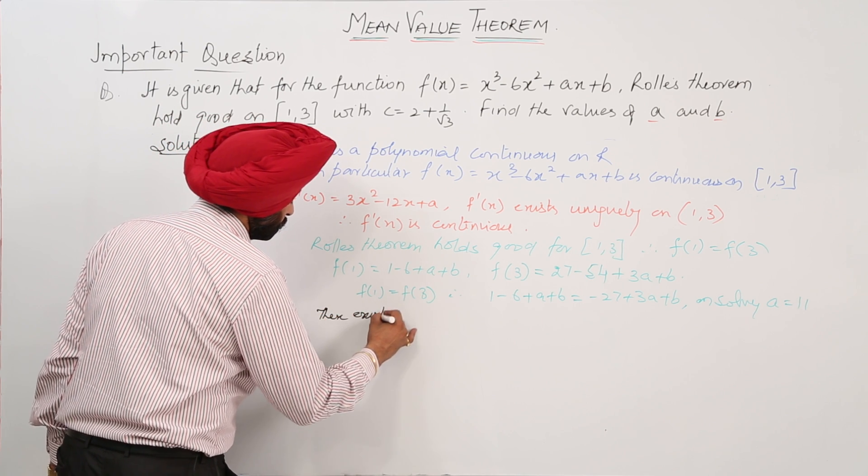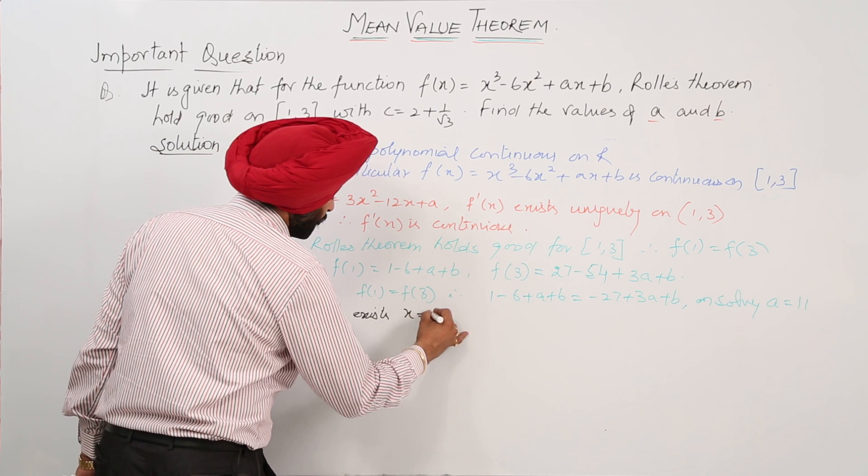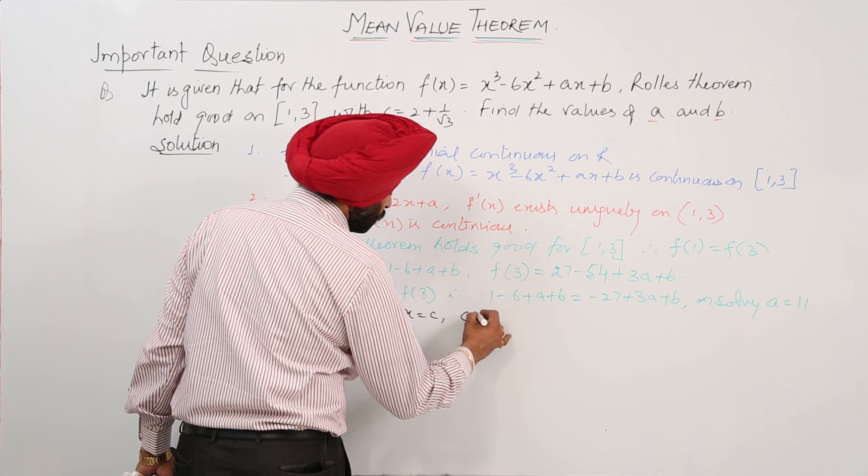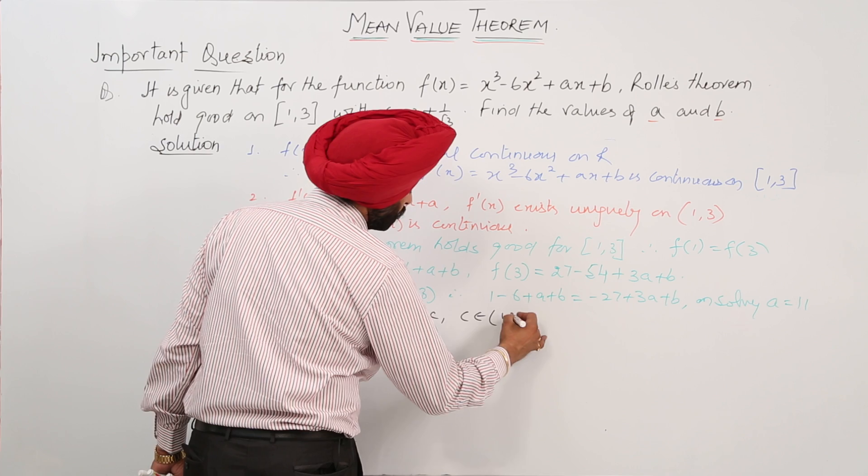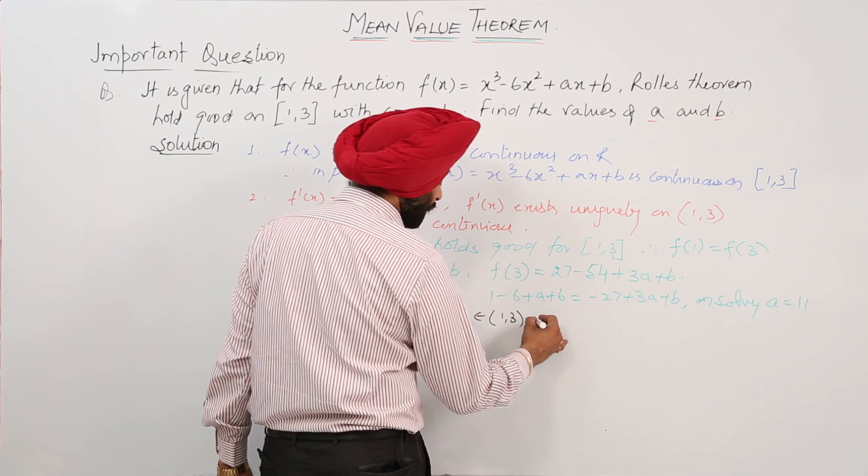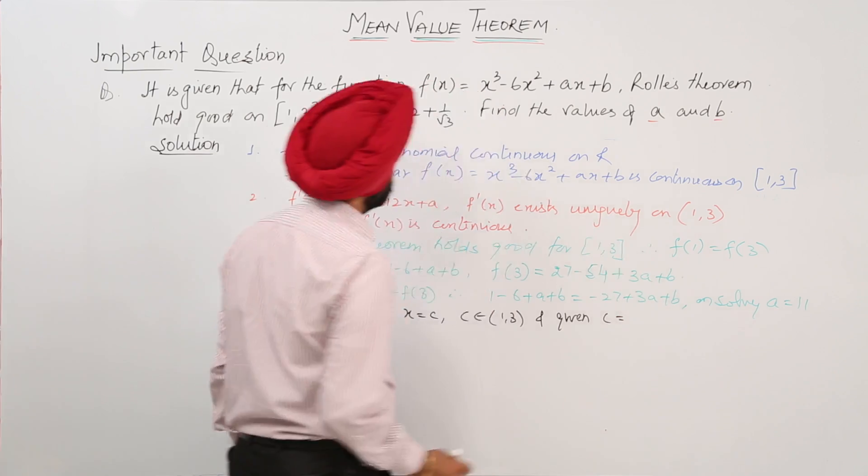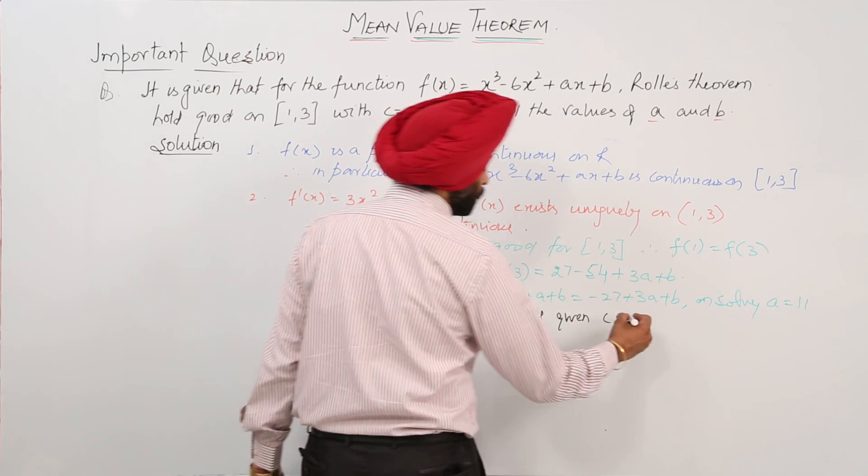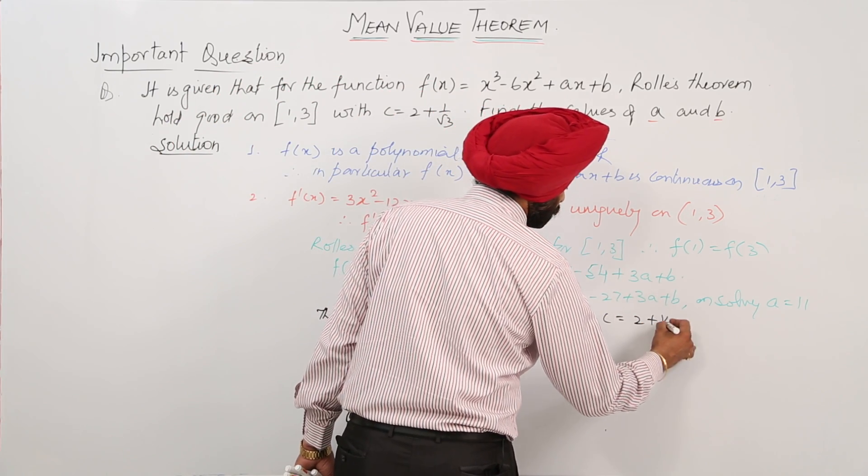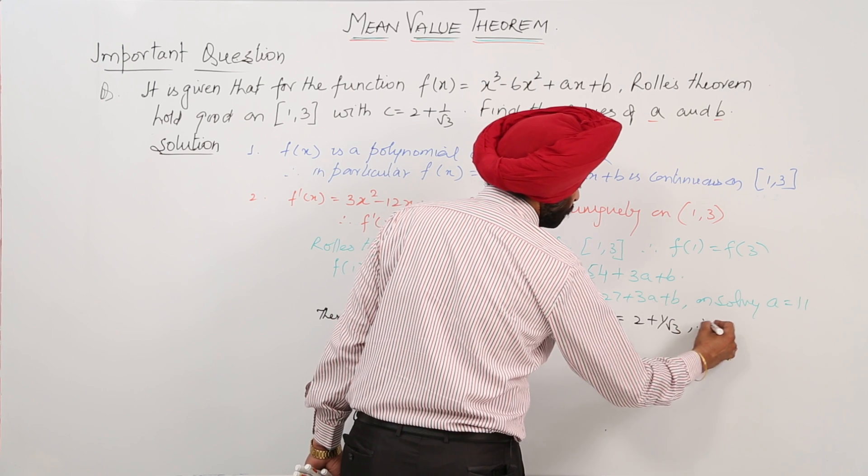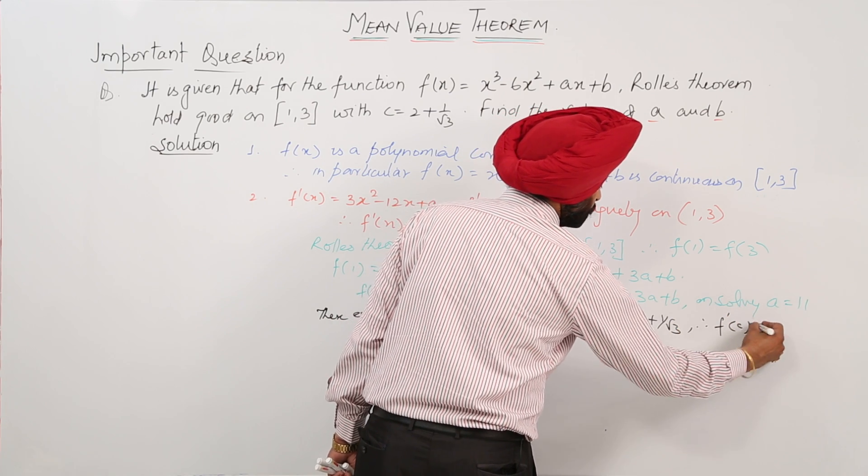Now, there exists x = c where c belongs to (1, 3). And given c = 2 + 1/√3, therefore f'(c) = 0.